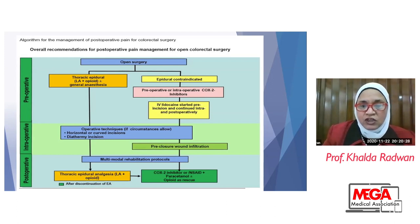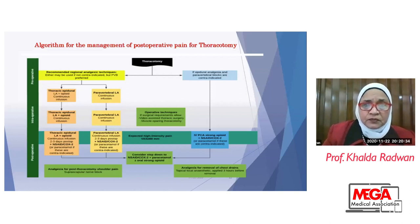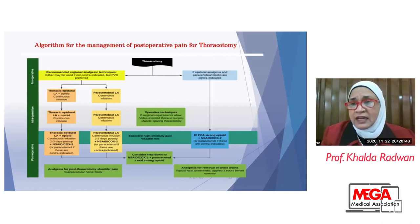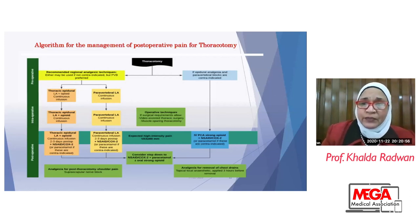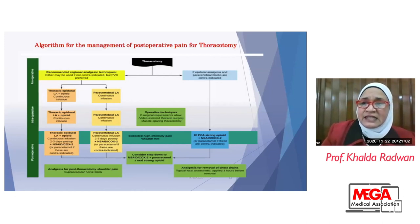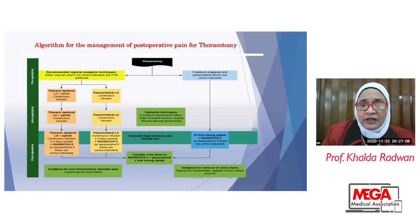Multimodal rehabilitation protocols include thoracic epidural analgesia and COX-2 inhibitors with paracetamol. For thoracotomy, regional anesthesia — specifically paravertebral block — is the main recommended approach. The multimodal effects of regional anesthesia, either with epidural with a catheter, local nerve block with a catheter, or wound infiltration with drugs preoperatively, continued intraoperatively, may decrease the requirements of opioids postoperatively because of their opioid-sparing effects.